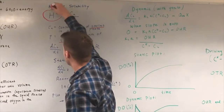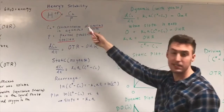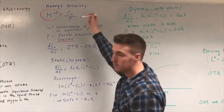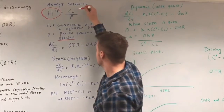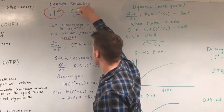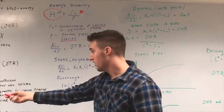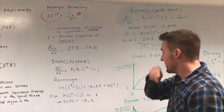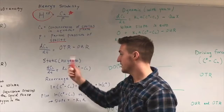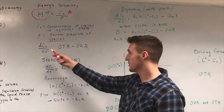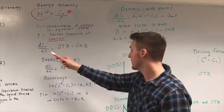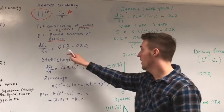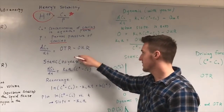Henry's solubility can be looked up for different species and will need to be looked up for oxygen. The partial pressure can be determined from the conditions, and together these are used to calculate CA, or C*, the saturation concentration. The differential equation for dissolved oxygen concentration in the liquid phase combines the oxygen transfer rate and the oxygen uptake rate.